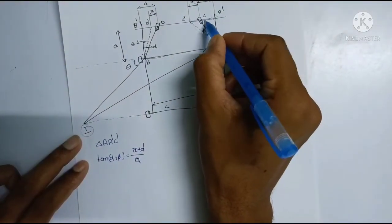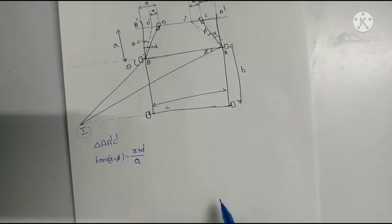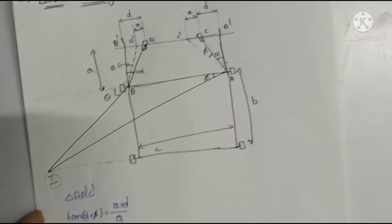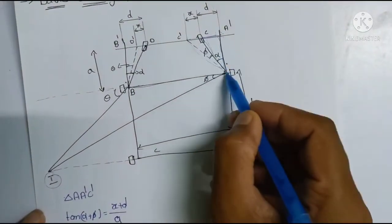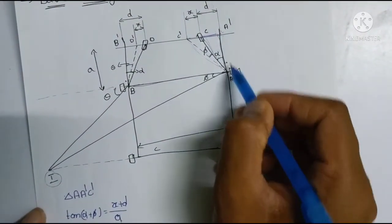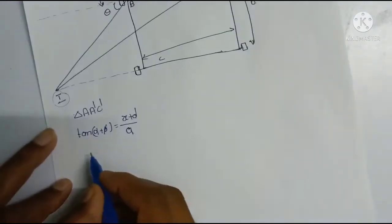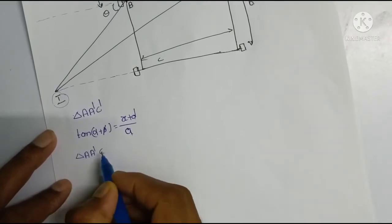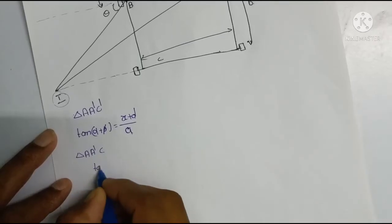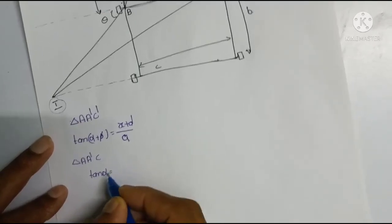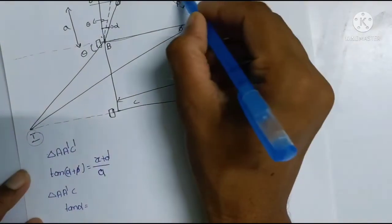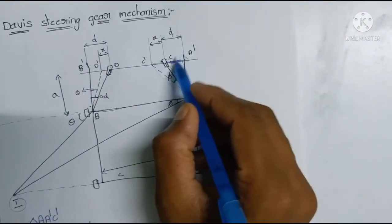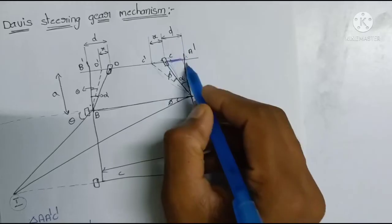For the next triangle, consider triangle A, A dash, C. In triangle A, tan(α) is equal to opposite side by adjacent side. The length is d, so tan(α) = d by A.